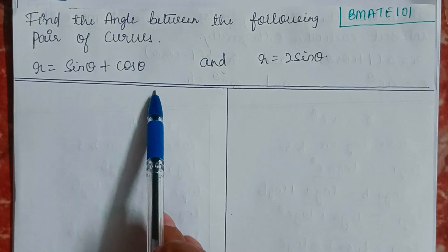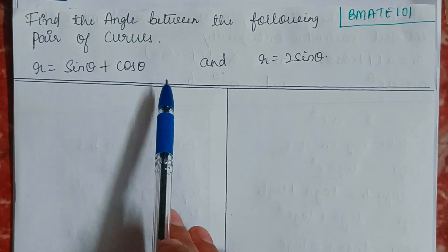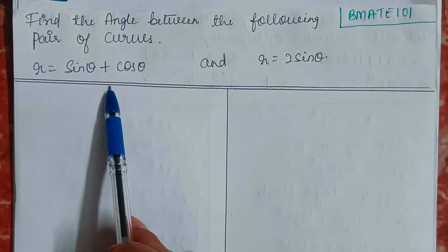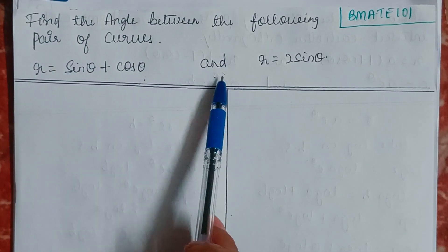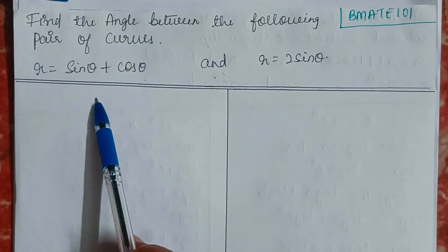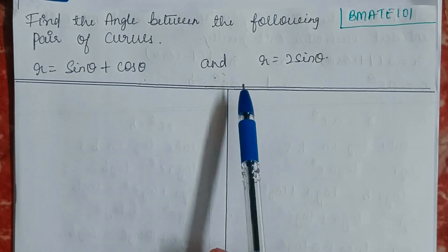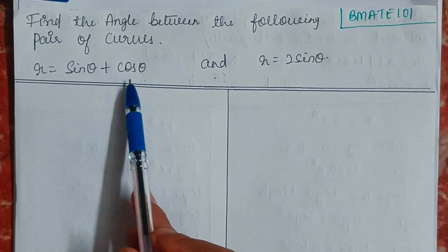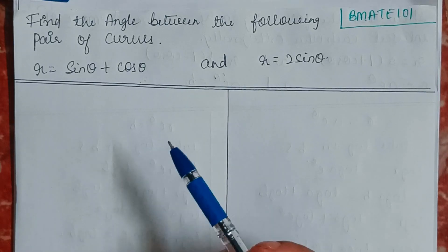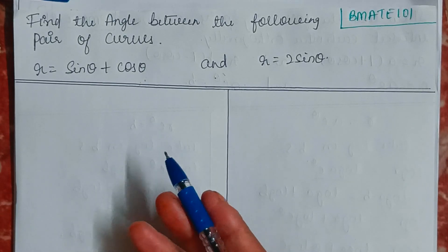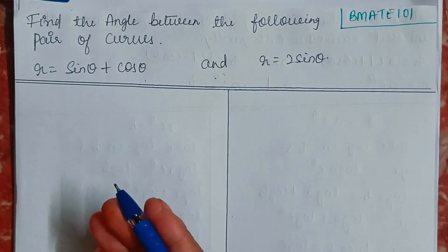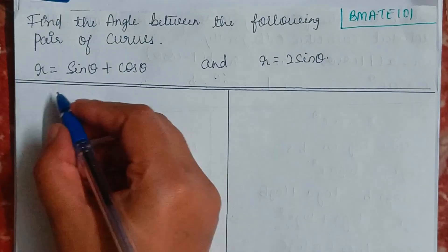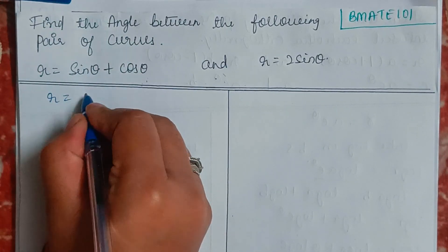In our previous videos we learned how to show that a pair of curves intersect orthogonally. Orthogonally means the modulus of the difference φ₁ minus φ₂ must equal π/2, or the product of tan φ₁ and tan φ₂ must equal minus 1. It is not necessary that curves always intersect orthogonally — the angle of intersection might differ.